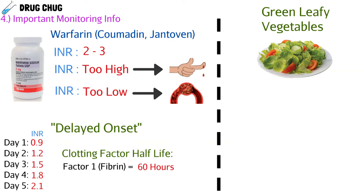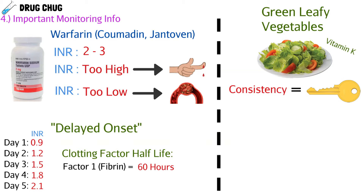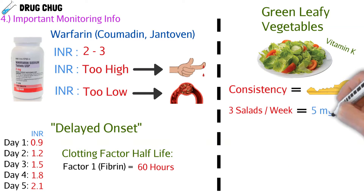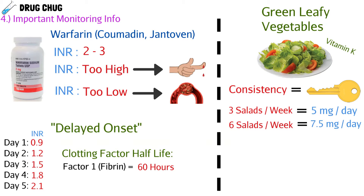Another high-yield point: patients eating green leafy vegetables. Since warfarin is a vitamin K antagonist, and green leafy vegetables are rich in vitamin K, they affect warfarin's efficacy. We don't tell patients to stop eating vegetables — consistency is key. If a patient eats three salads a week, they may be on 5 mg/day of warfarin; if they eat six salads a week, it might go up to 7.5 mg/day. We check the INR and adjust accordingly. A helpful mnemonic: vitamin K clots, warfarin thins.